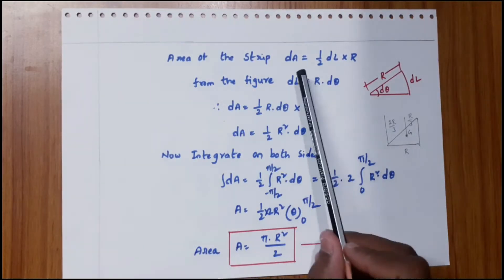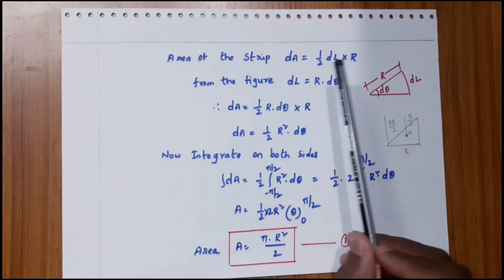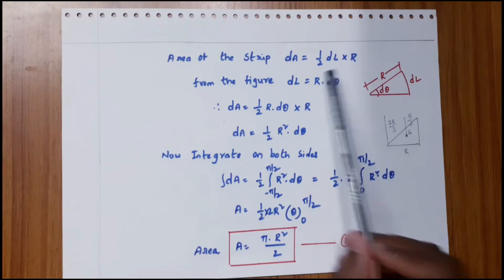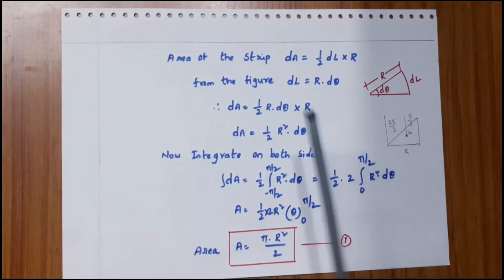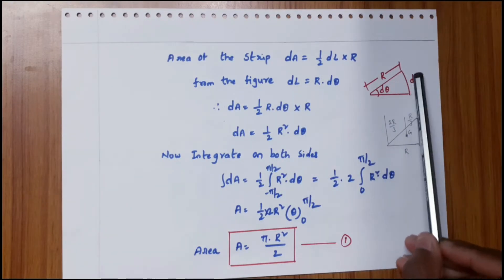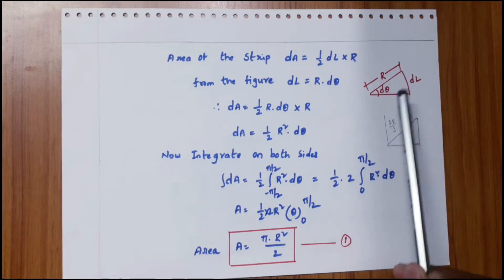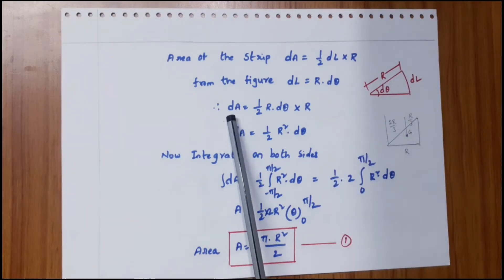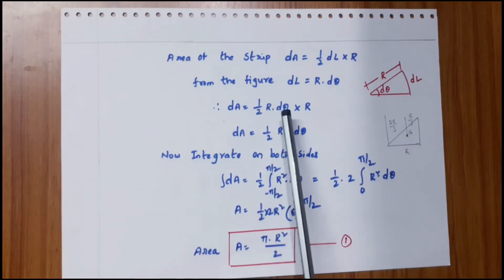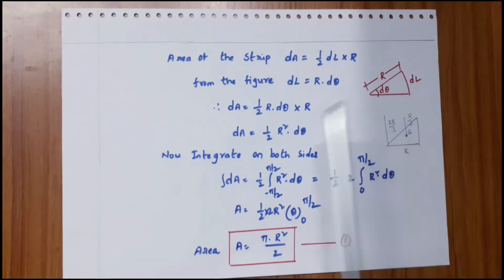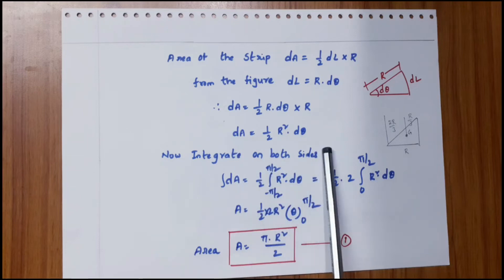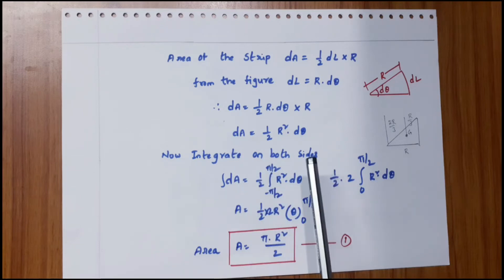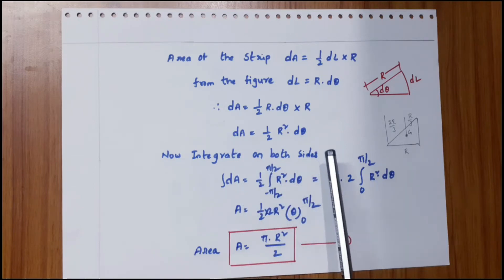The area of the strip dA equals the area of the triangle: half times dl times r. From the figure, dl equals r·dθ, so dA equals half times r times dθ times r, giving dA = (1/2)r²·dθ. This is the strip area.